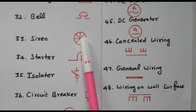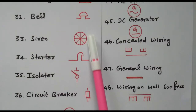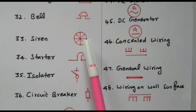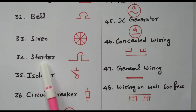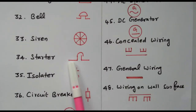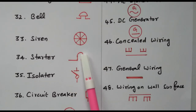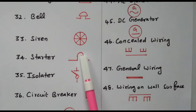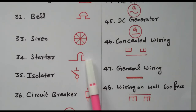Then siren is a circle over which eight cross lines are available. The starter, used in motors, shows a semicircle with a disconnection on one side — when it is contacted, the motor will start and supply will be given.